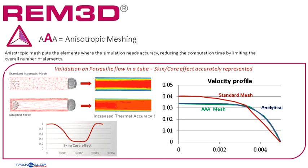However, in the other directions, we do not need that many elements, since almost nothing happens. That is what anisotropy does to the remeshing — it makes sure we capture the right physical phenomenon with the lowest number of mesh elements possible. It reduces the computation time and increases the accuracy of the results.